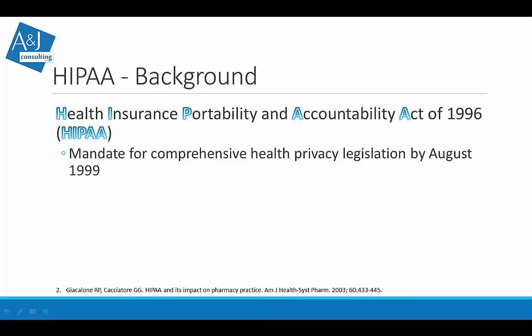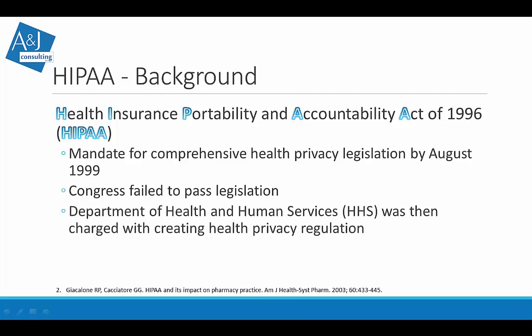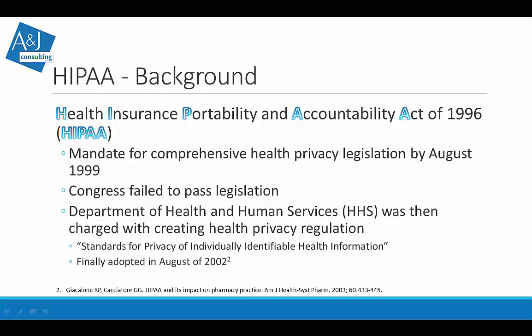A mandate within the act required comprehensive health privacy legislation by August 1999. Congress essentially mandated itself to pass privacy legislation and laid out consequences if it failed to do so. Congress did fail to pass legislation by 1999, so the Department of Health and Human Services (HHS) was charged with creating health privacy regulation. HHS, under the executive branch, created regulations — not legislation. The standards for privacy of individually identifiable health information were finally adopted in August 2002.